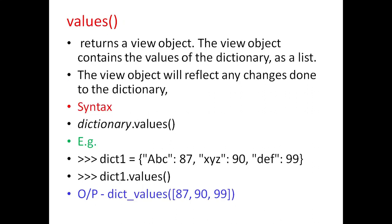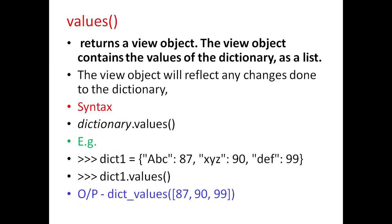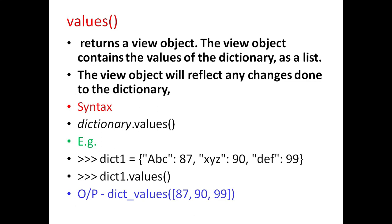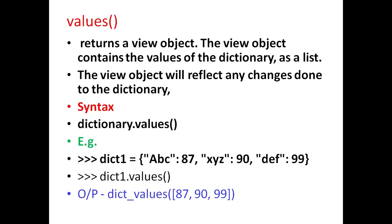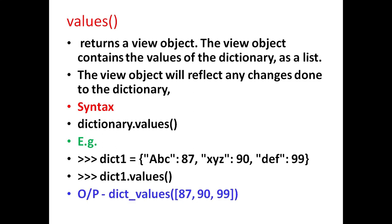Next is values, which returns a view object. The view object contains the values of the dictionary as a list. The view object will reflect any changes done to the dictionary. The general syntax is dictionary.values. For example, if dictionary dict1 is defined with these keys and values and if we give the method dict1.values, it will display the values from the dictionary.